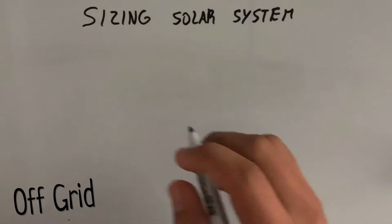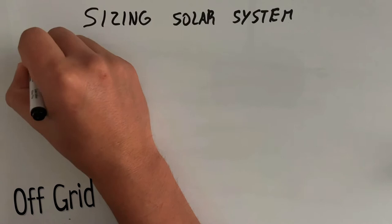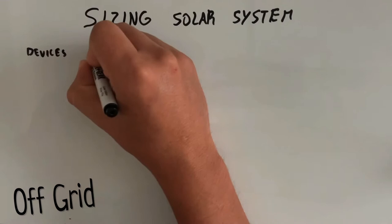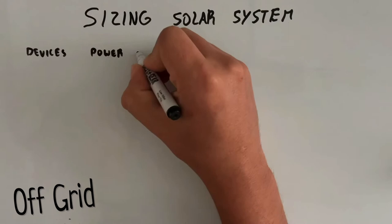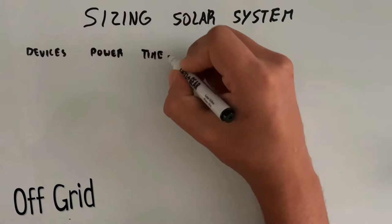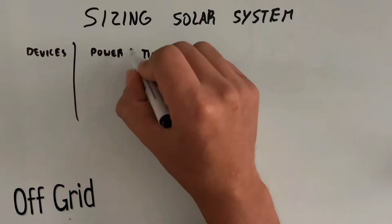Sizing your solar system. We're going to make a table of the things that we want to run, the power, and for how long. So in the first column we have devices, in the second column we have power, on the third one we have how long we want to run it for, so we're going to label that as time, and on the last column we're going to have watt hour, power and time multiply.